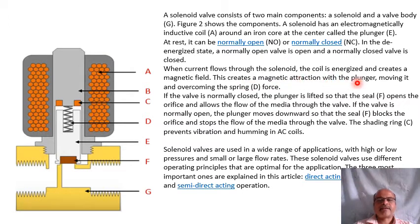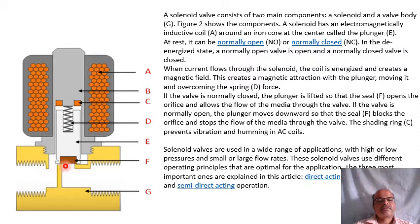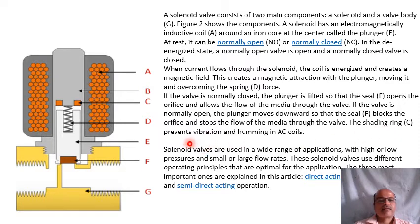If the valve is normally closed, the plunger is lifted so that seal F opens the orifice, allowing the flow of media through the valve. When closed, there is no movement of fluid. If the valve is normally open, the plunger moves downward so that seal F blocks the orifice and stops the flow of media. The shading ring C prevents vibration and humming in AC coils.